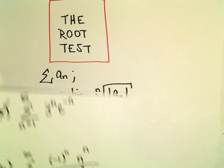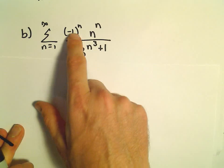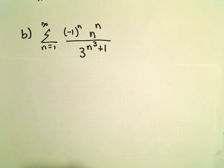Alright, so here we're going to look at another example using the root test. So in Part B, we've got from 1 to infinity, negative 1 to the n times n to the n over 3n to the third plus 1.